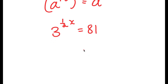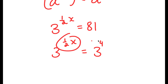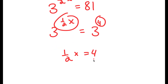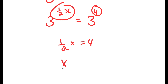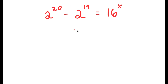Now, 81 is the same thing as 3 to the power of 4. So I have 3 to the power of x/2 is equal to 3 to the power of 4, which means x/2 equals 4, and x equals 8. So 8 is my answer.